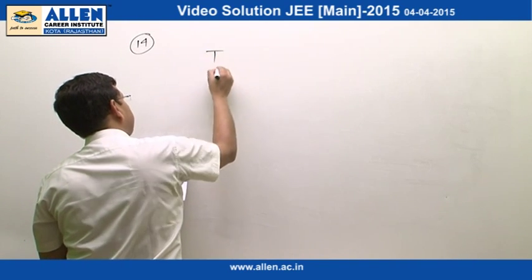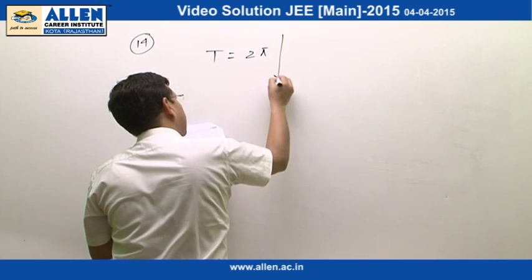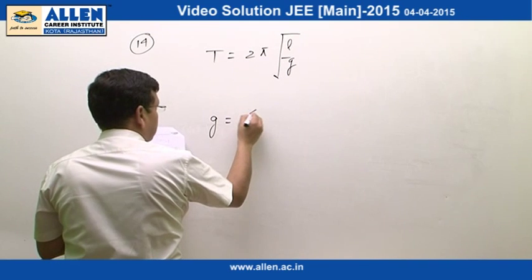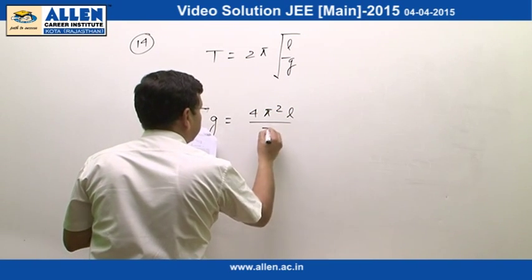We know the expression of time period of simple pendulum. It is going to be equal to 2 pi root l over g. From here, g turns out to be 4 pi square l over T square.